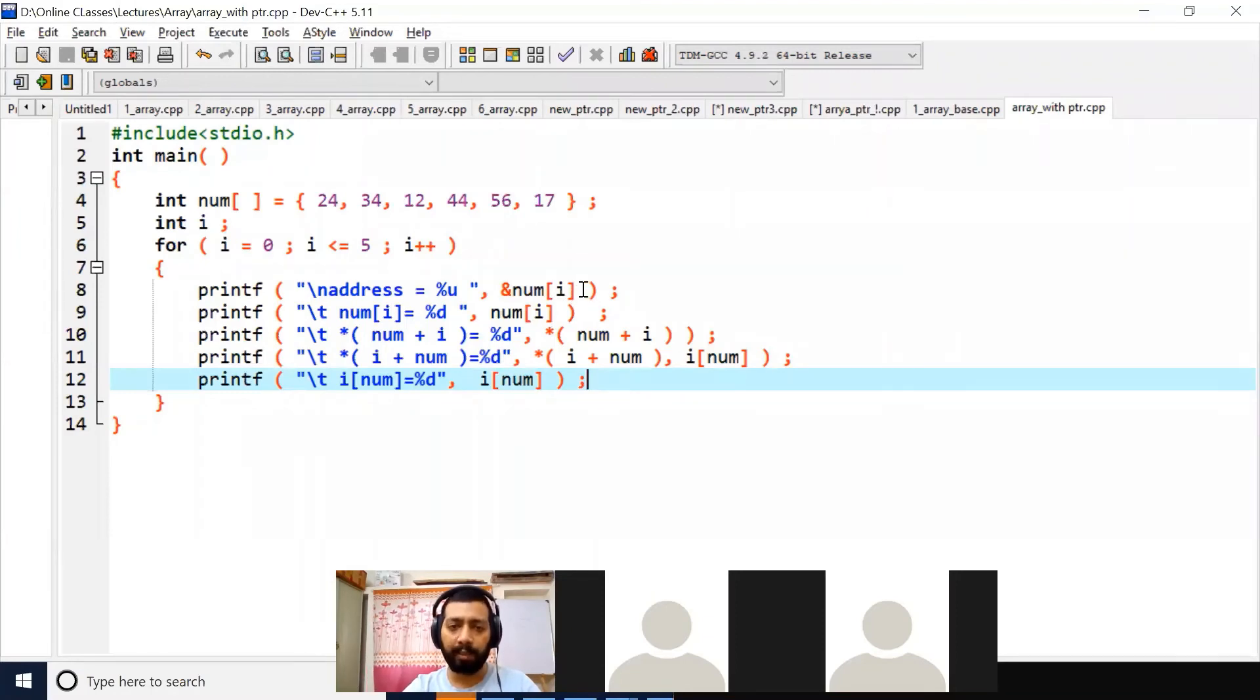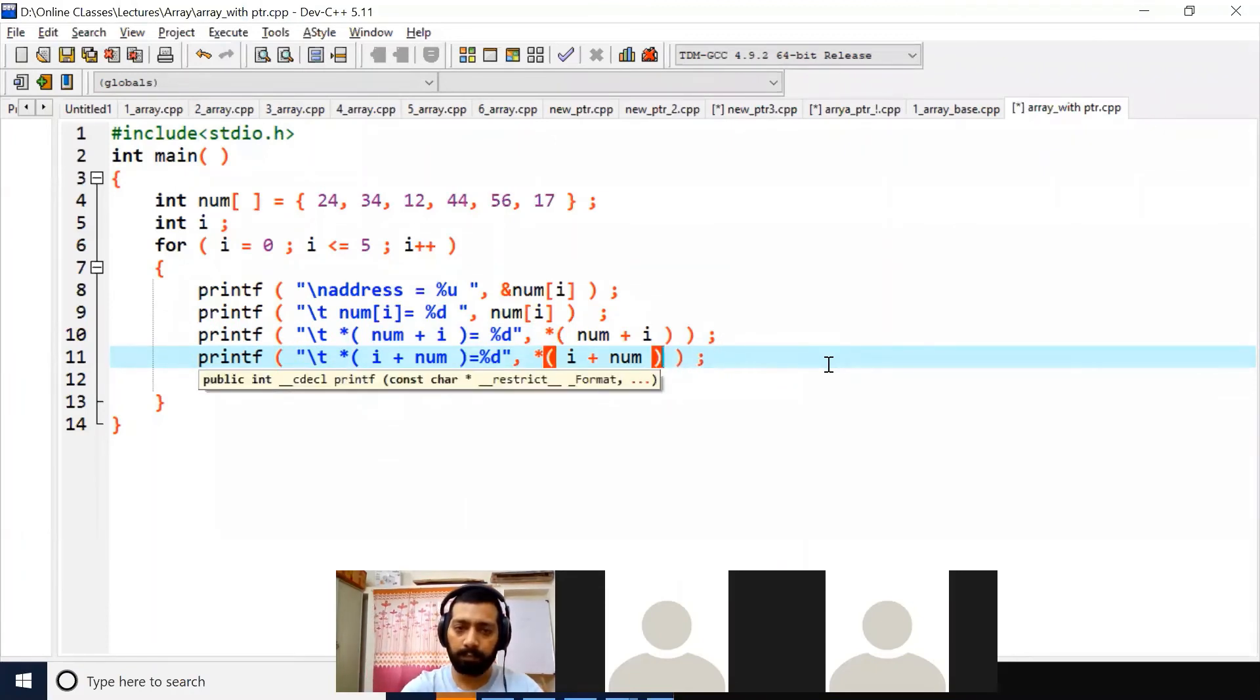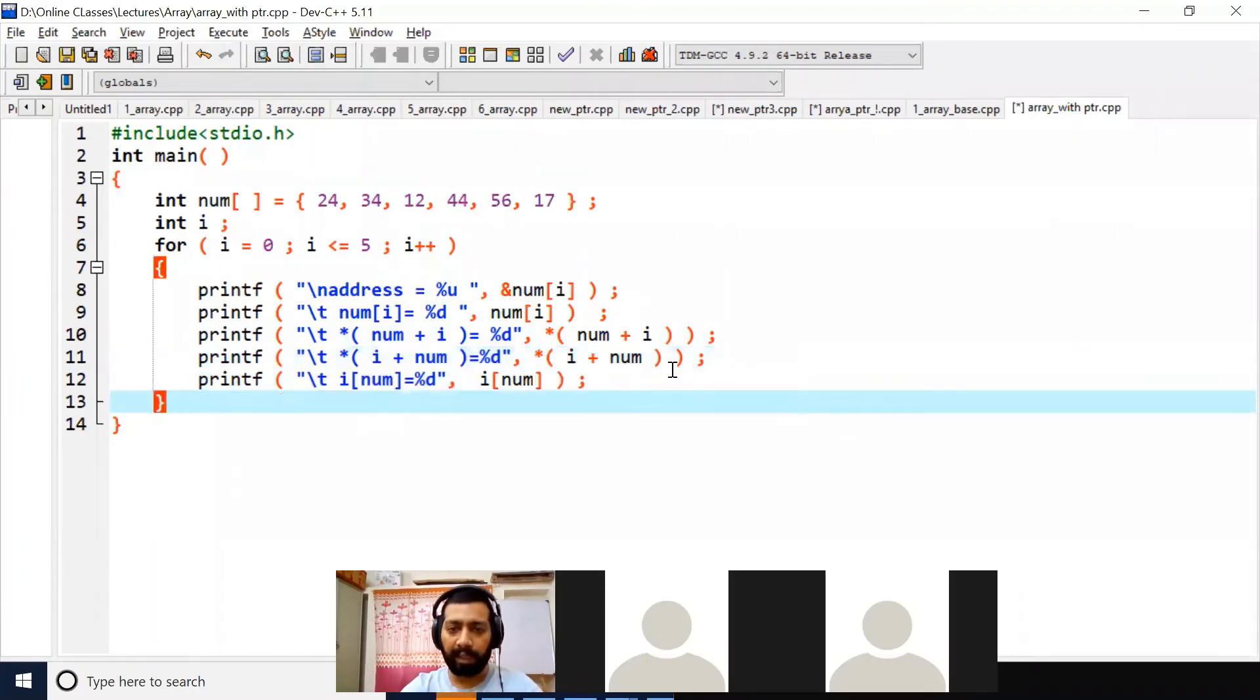So see what I am printing. This is my array num. I am printing first of all address of num. Then I am printing the value num of i, and i is from 0 to 5. That's fine. It will work fine. Then what I am printing? Star of num plus i. We will see num of i and star of num plus i are same or not. Then after that, I will print star of i plus num. Then I will print i of num.